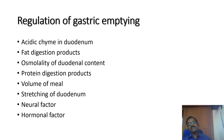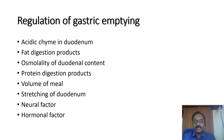Hormonal factors: secretin, cholecystokinin, and gastric inhibitory peptide inhibit gastric emptying, while gastrin stimulates gastric emptying. So gastric emptying is controlled in a slow manner and is important for the digestion and absorption of food in the intestine.